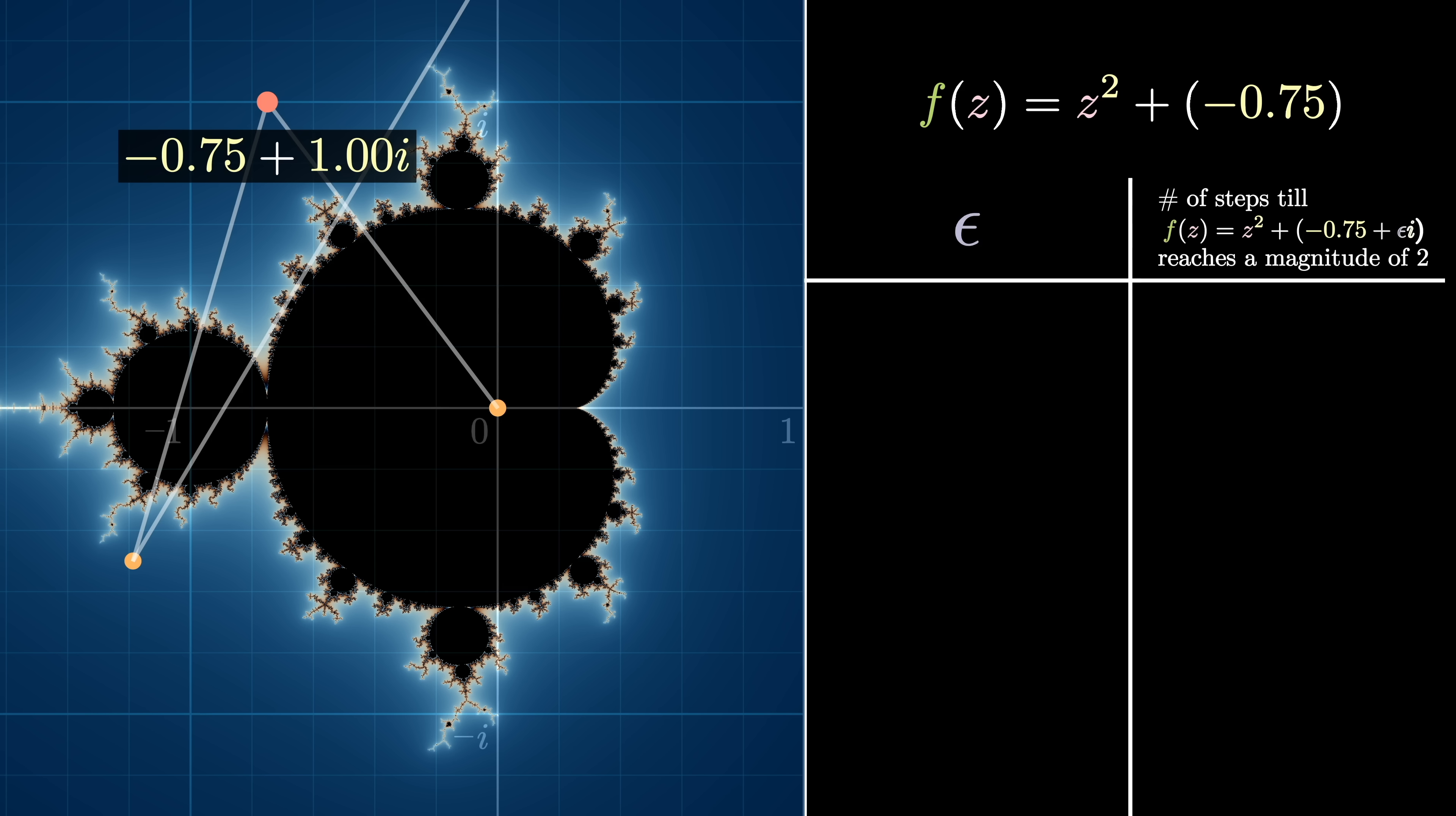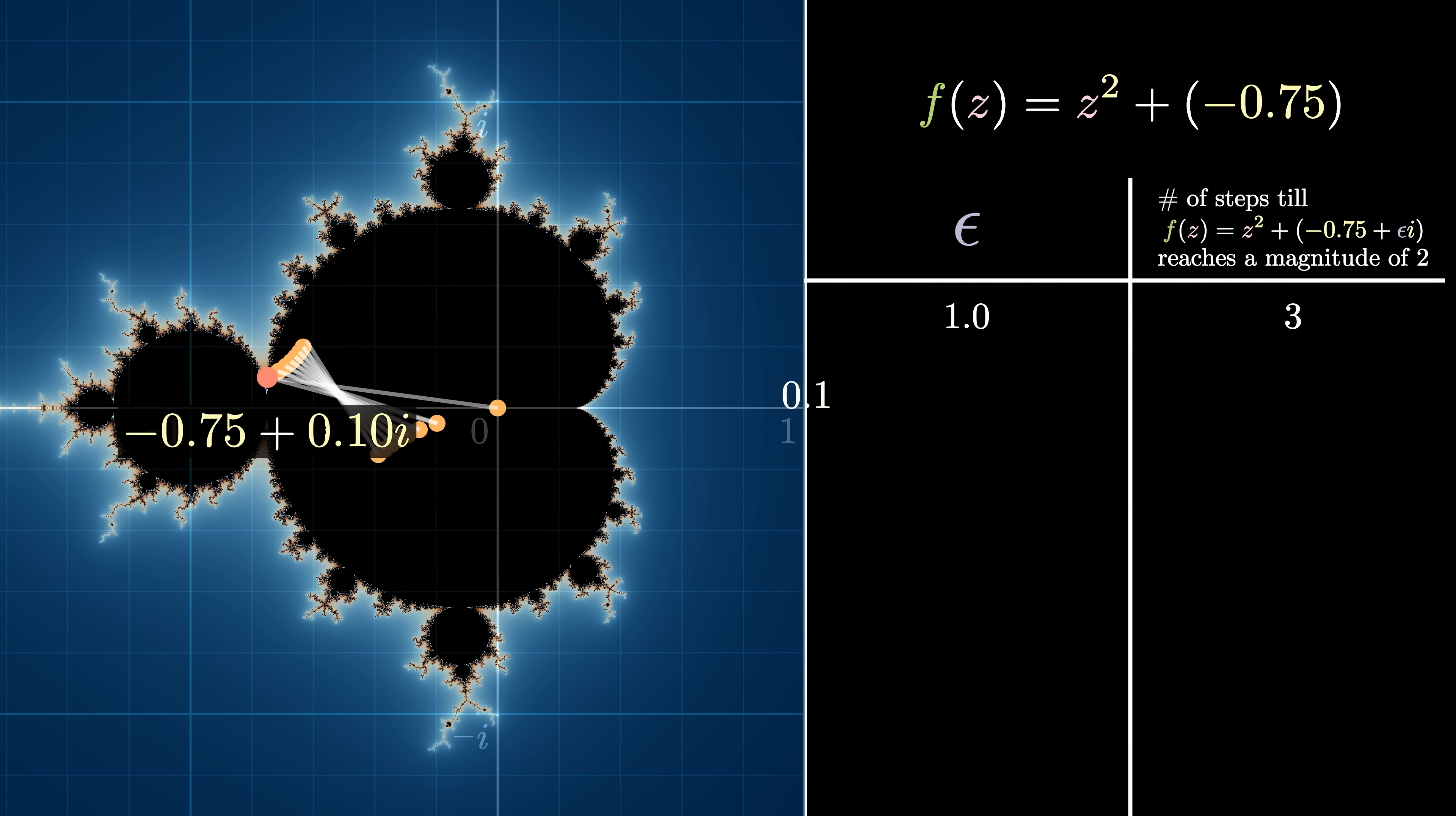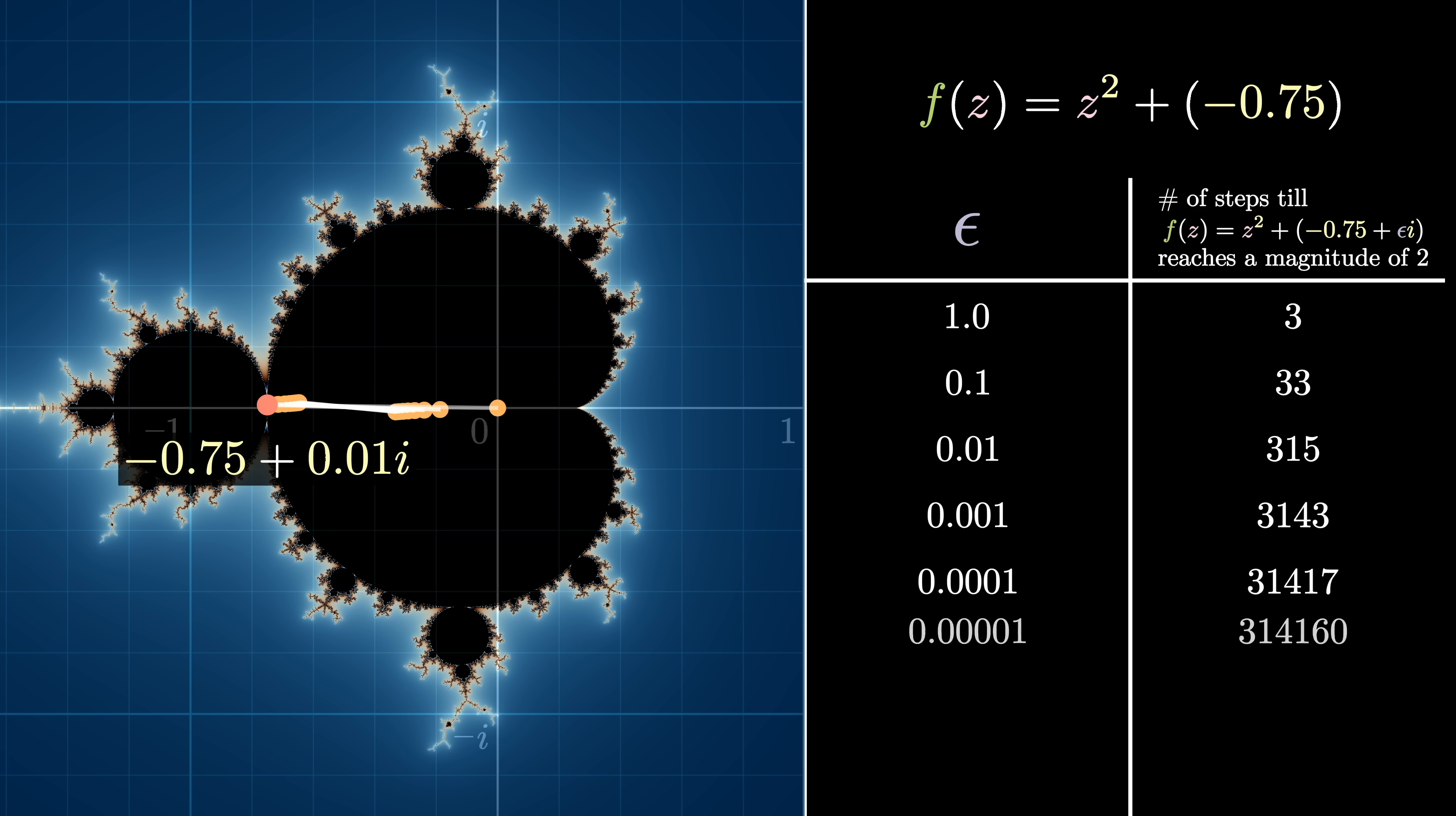If epsilon equals 1, it takes 3 steps. If epsilon equals 0.1, 33 steps. Nothing out of the ordinary. But if I keep going, 0.01 315 steps, 0.001 3143 steps, and so on. Well, notice a pattern? These are the digits of pi.